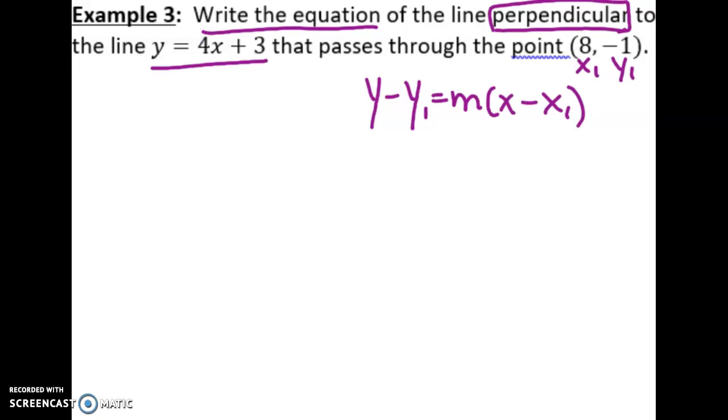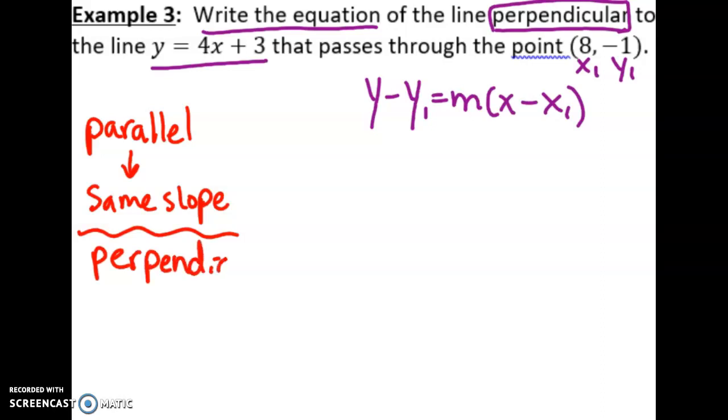In the previous video, we mentioned that parallel lines have the same slope. But perpendicular lines are very different. With perpendicular lines, we have what's called opposite reciprocal slopes.